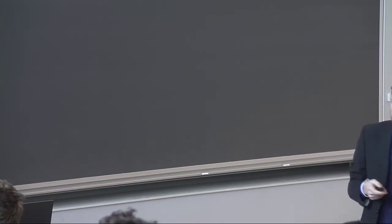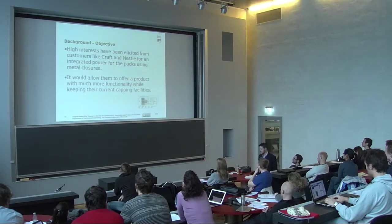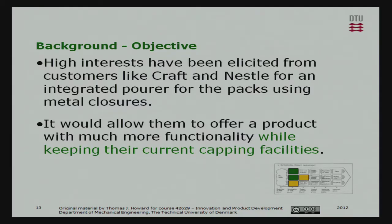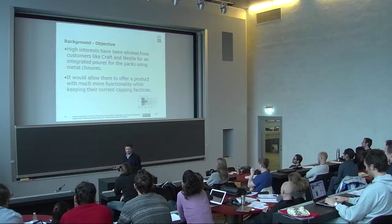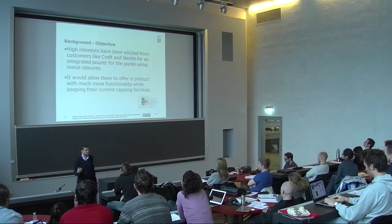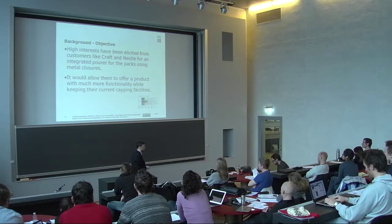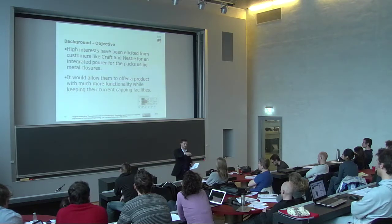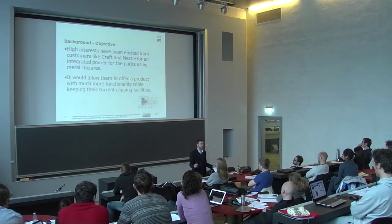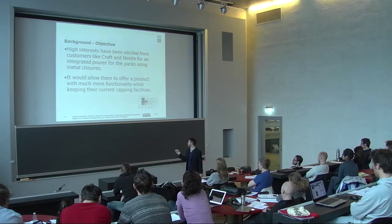We have a project approval form — they run hundreds of projects per year, hence the large project number. Some key people within the team; this is one I was project leader on. They set a series of objectives. There was high interest from customers such as Kraft and Nestlé for an integrated pourer for packs using metal closures. It would allow them to offer more functionality while keeping their current capping facilities. These are products for which we already provide a bottle and metal cap, and they want to produce this extra functionality without changing their production facilities at all — keeping the current packing lines.